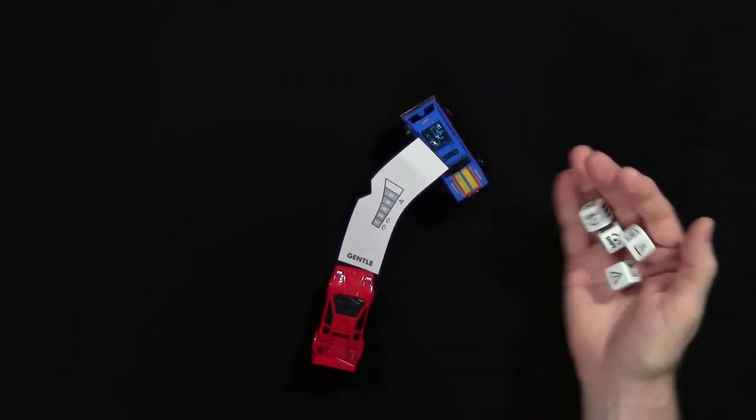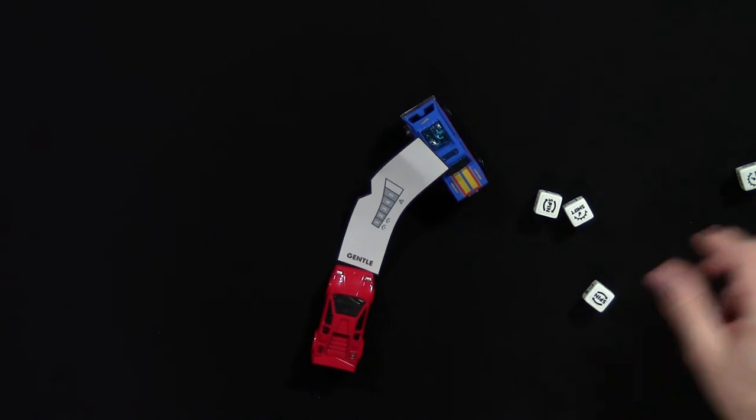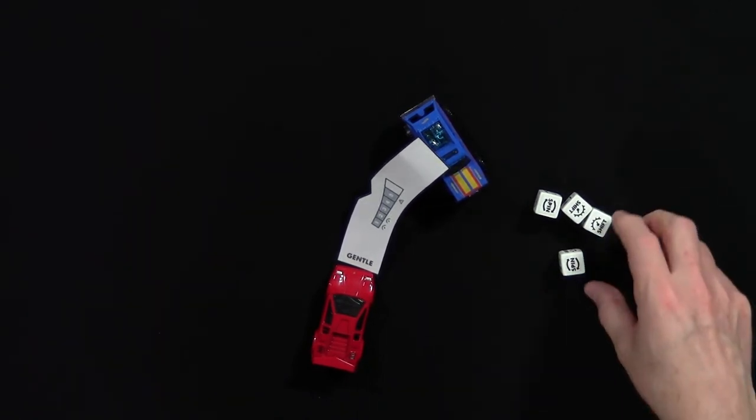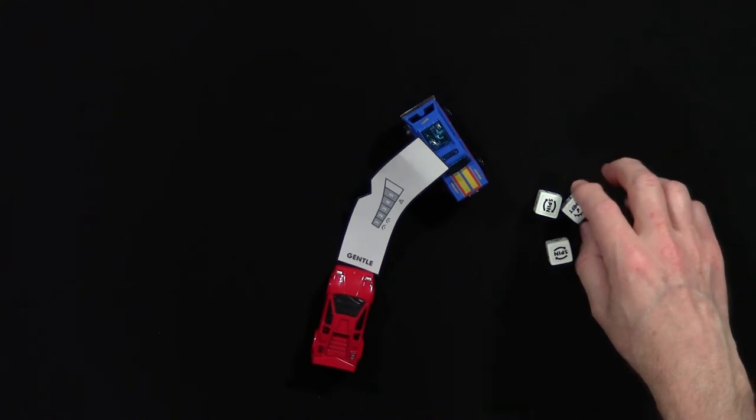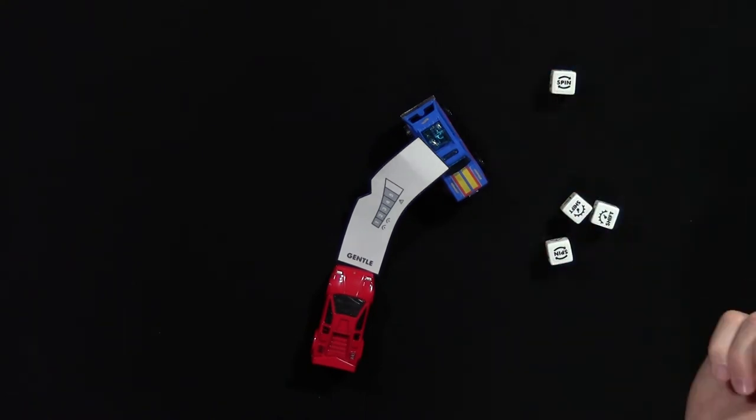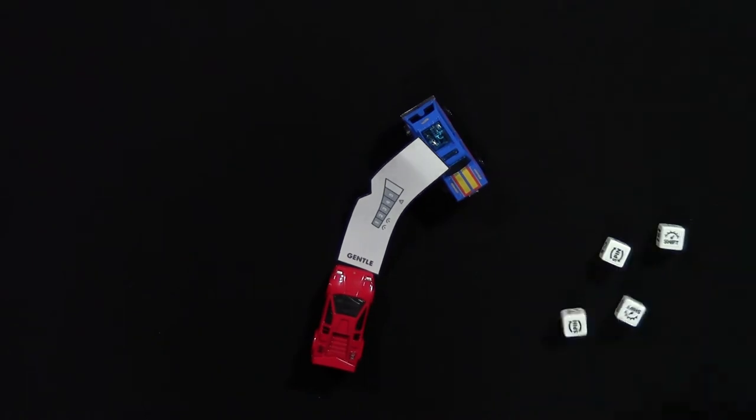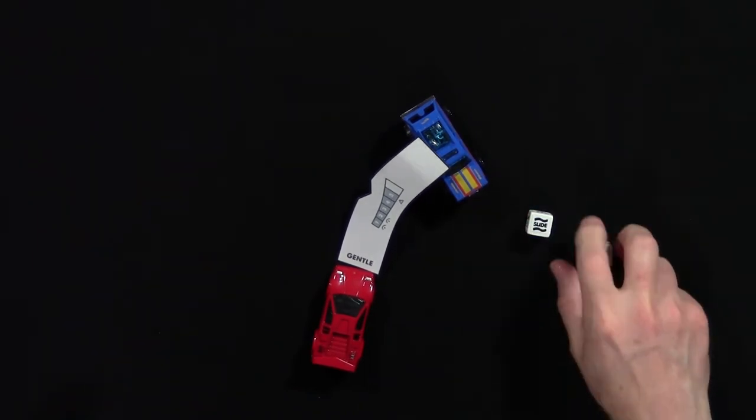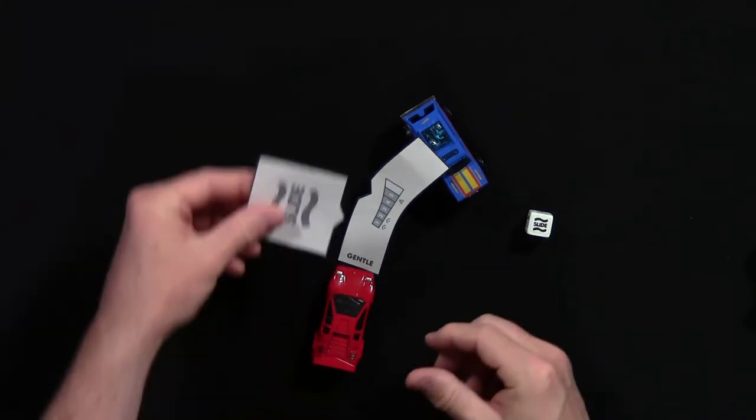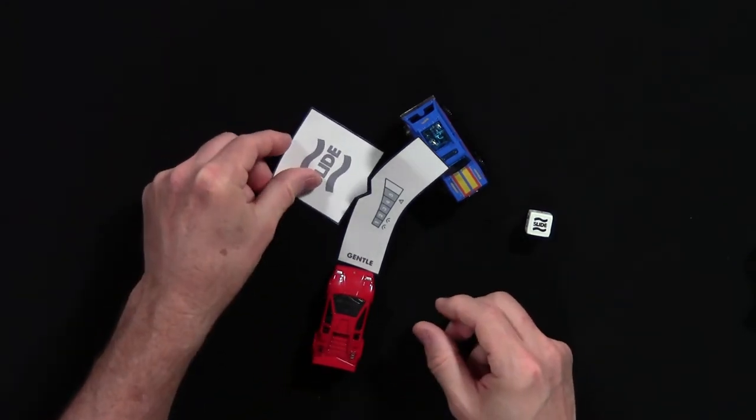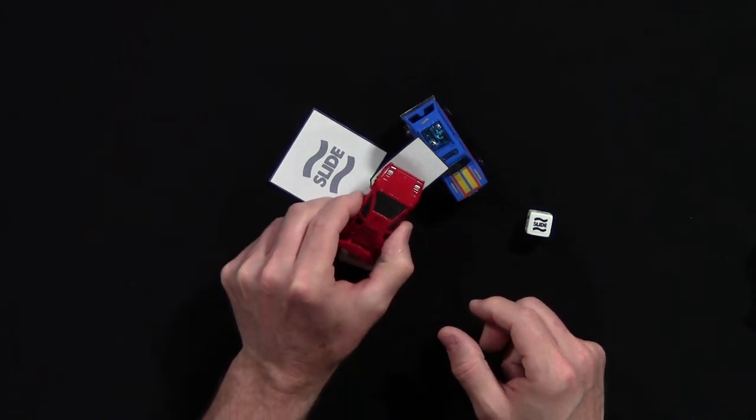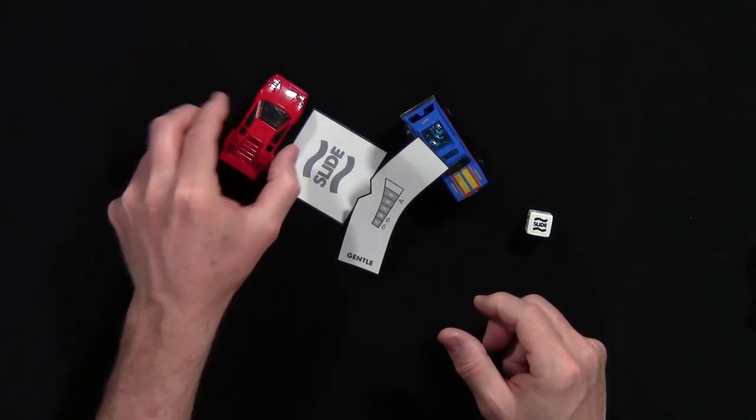I'm going to roll these. I want a slide. I didn't get one, but I can take a hazard token and reroll. Let's say we get a slide. What happens to the vehicle is you put it in that notch there. The vehicle goes to the center—it doesn't collide, so it slides out here. That keeps you safe.